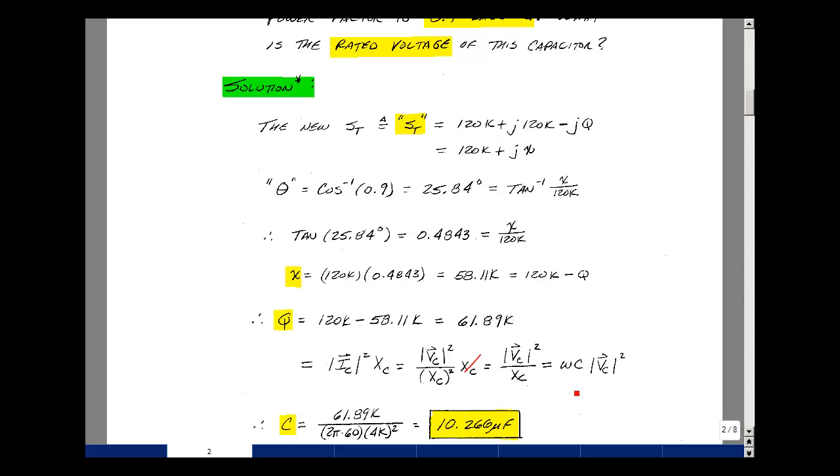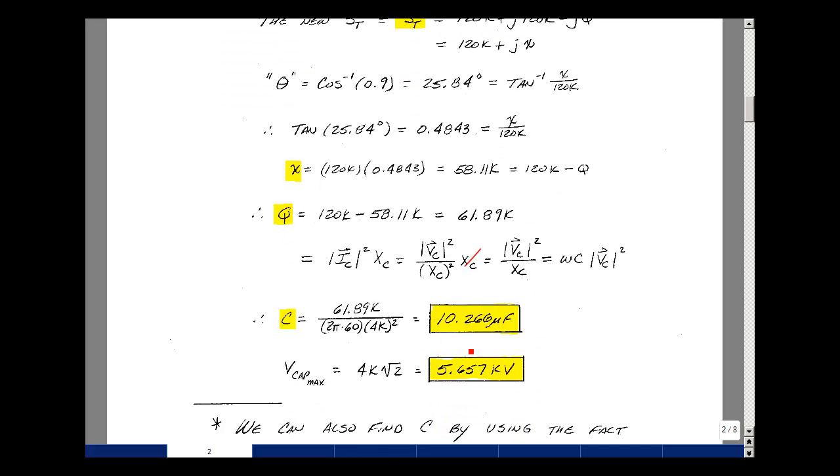So now I can solve for the capacitor value. So we take the value of Q, which is 61.89k, and divide that by 2 pi F, which is at 60 hertz, and then the magnitude of my voltage, which is a 4,000 volt RMS signal. I get a value of 10.266 microfarads.